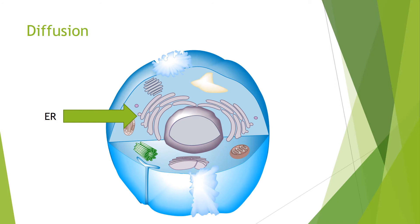Ethylene needs to get to its receptors, which are in the ER membrane. Ethylene is a gaseous molecule that can diffuse easily through membranes into different compartments of the cell. It's actually more soluble in the hydrophobic membrane core than in the aqueous cytosol, which makes it quite easy for the ethylene to get to its receptors in the ER membrane.